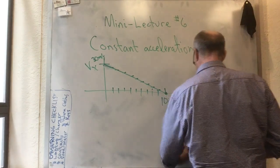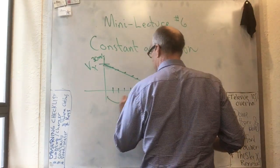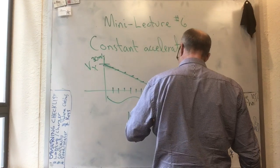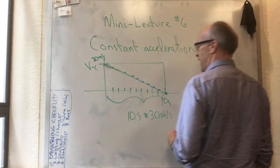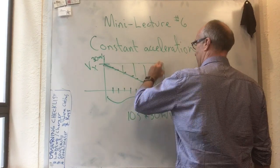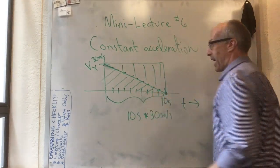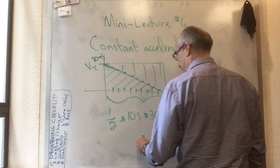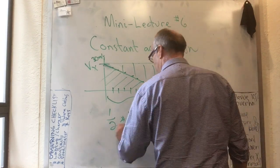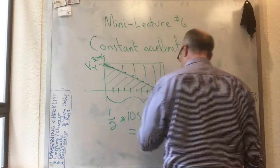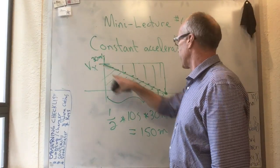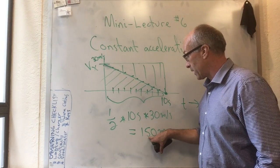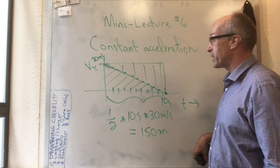The area under this curve is this time, which was 10 seconds, times this height, which is 30 meters per second, divided by 2. Because there's only half of this triangle that's actually under the curve. So it's 1 half times 10 seconds times 30 meters per second, which is 300 meters times 1 half, which is equal to 150 meters. So I claim that if a particle starts at 30 meters per second and takes 10 seconds to decelerate to no velocity, then that particle will go 150 meters in that time.